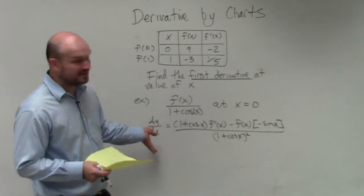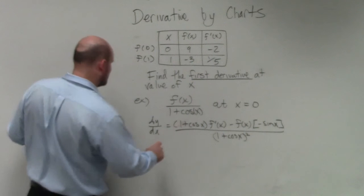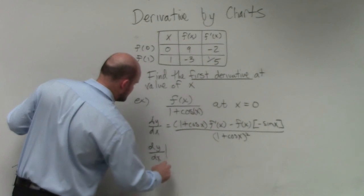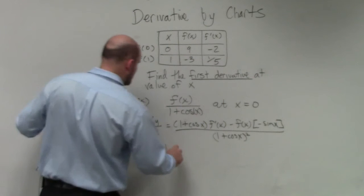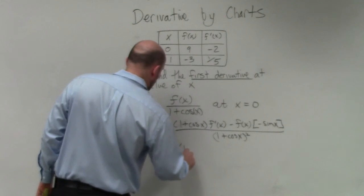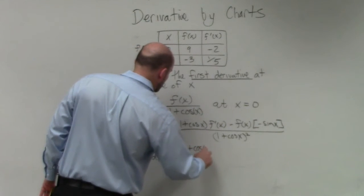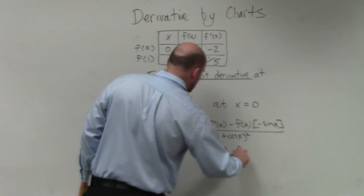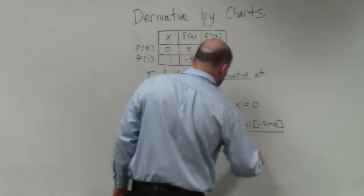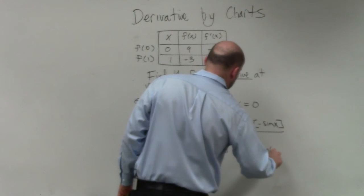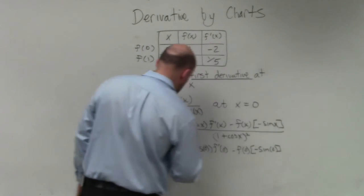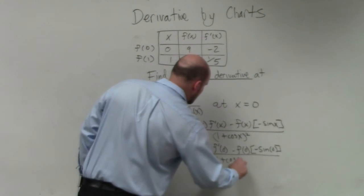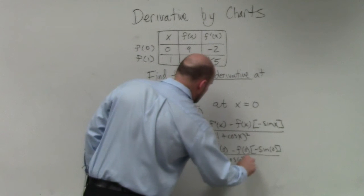Now I'm evaluating that at x equals 0. Let's write that notation-wise. At x equals 0, that looks like this: 1 plus cosine of 0 times f prime of 0, minus f of 0 times negative sine of 0, all over 1 plus cosine of 0 squared.